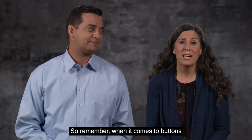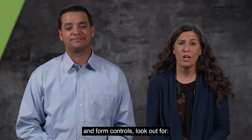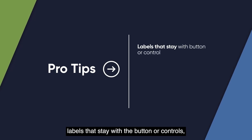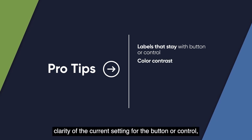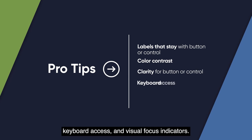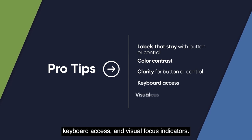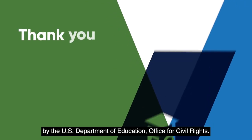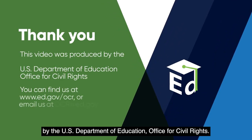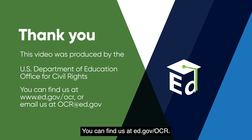So remember, when it comes to buttons and form controls, look out for: labels that stay with the button or controls even when the page is enlarged, sufficient color contrast, clarity of the current setting for the button or control, and keyboard access and visual focus indicators. This video was produced by the U.S. Department of Education, Office for Civil Rights. You can find us at ed.gov/ocr or email us at ocr@ed.gov.